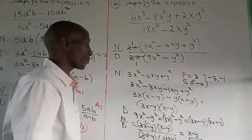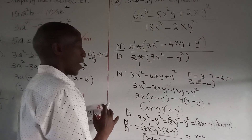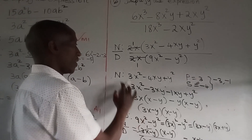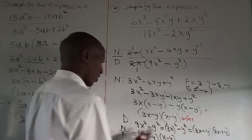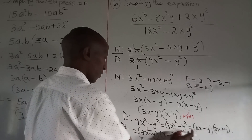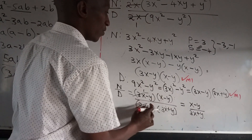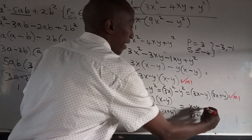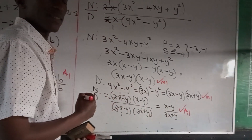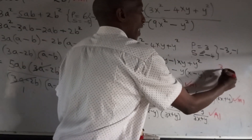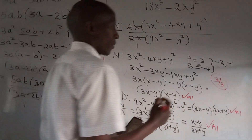For marking: numerator simplified correctly earns M1, denominator simplified correctly earns M1, and putting them together for the final answer earns A1 — 3 out of 3.